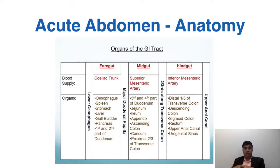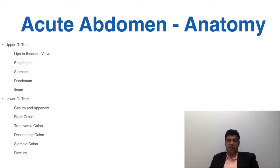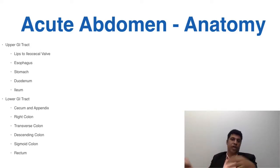The distal anus below the dentate line is actually below the pelvis. This covers the basic anatomy of the vascular structures and organs evolving from the foregut, midgut, and hindgut. Another way to subdivide the GI tract is into upper and lower GI. The upper GI tract runs from the lips to the ileocecal valve — essentially the esophagus, stomach, duodenum, and small intestine. The lower GI tract is commonly considered from the cecum and appendix, distal to the ileocecal valve, all the way to the anus.